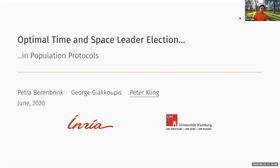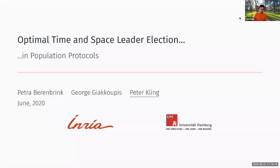Thanks for the introduction. Welcome everybody to my talk. What I present today is joint work with Petra Berenpink and George Giacopis. More or less everybody knows what leader election is, but maybe that's not true for population protocols, so let me give a quick introduction. It's a model for distributed computing where you consider a system consisting of N identical agents. The goal is to reach a global configuration where exactly one agent is in a distinguished leader state, and this should be maintained no matter what happens in the future.